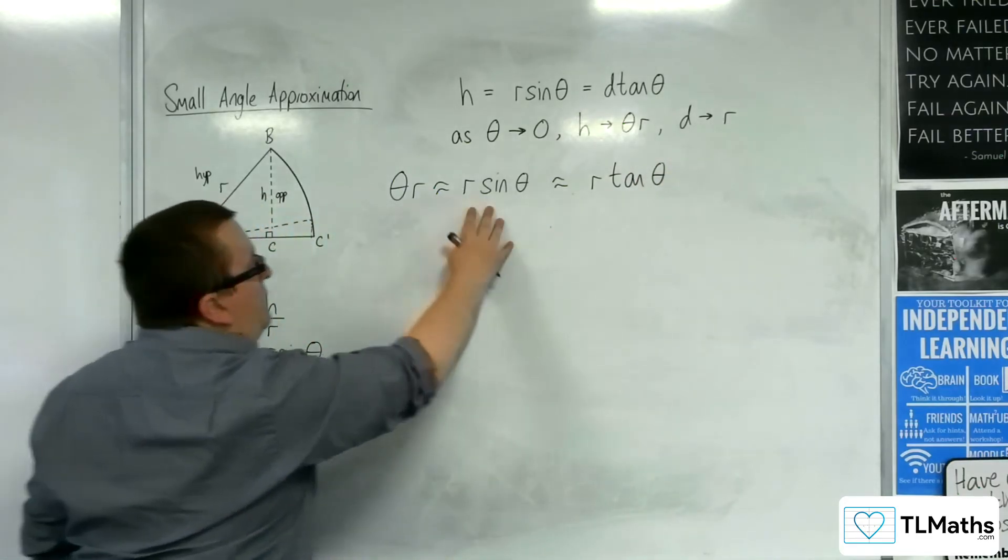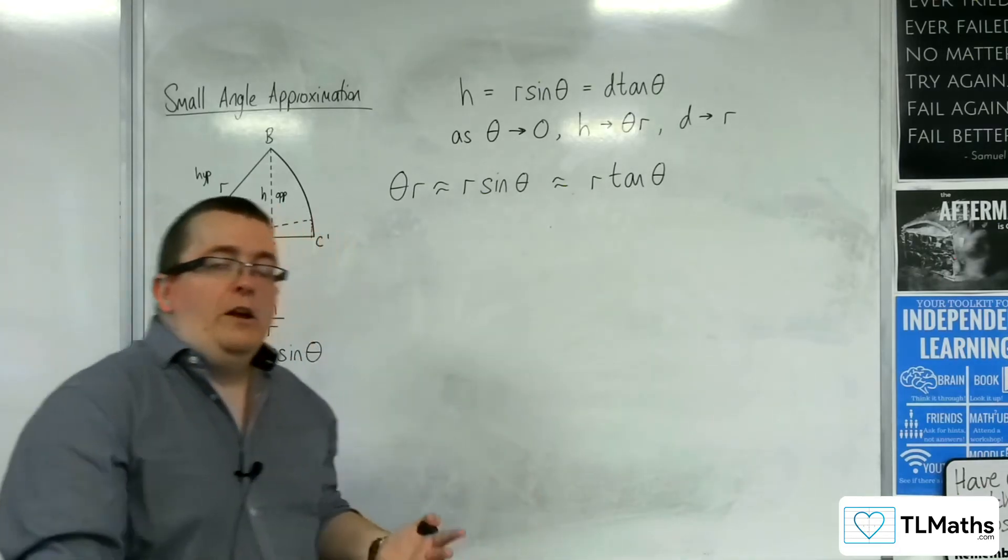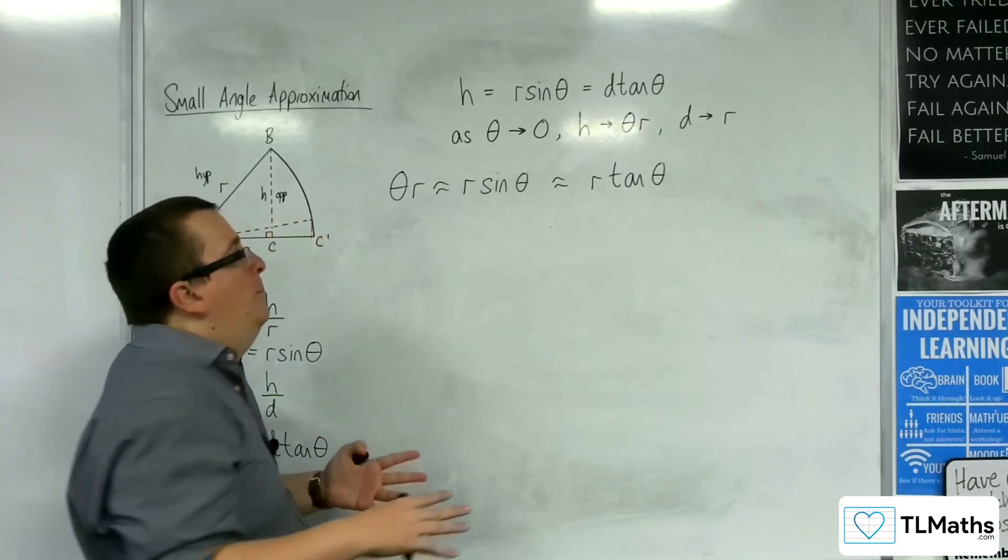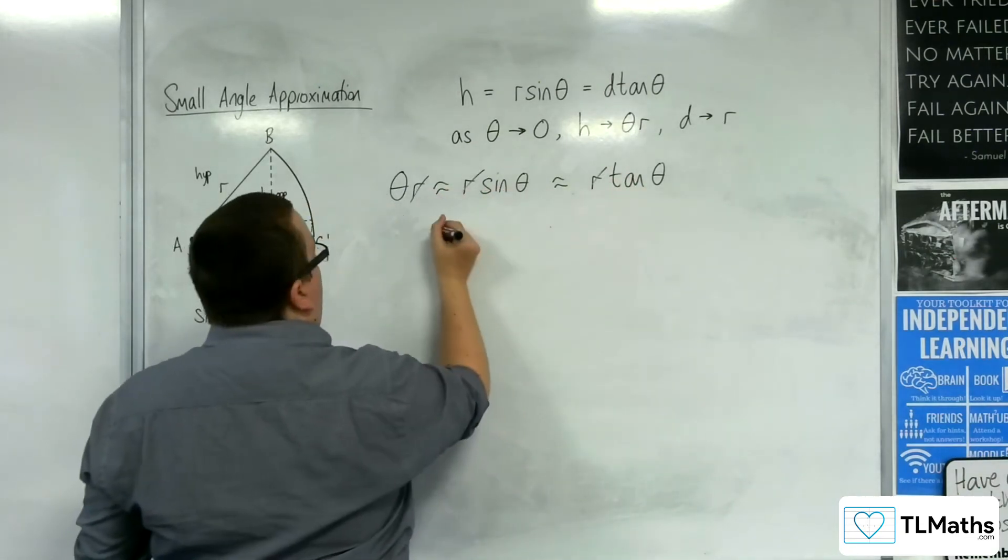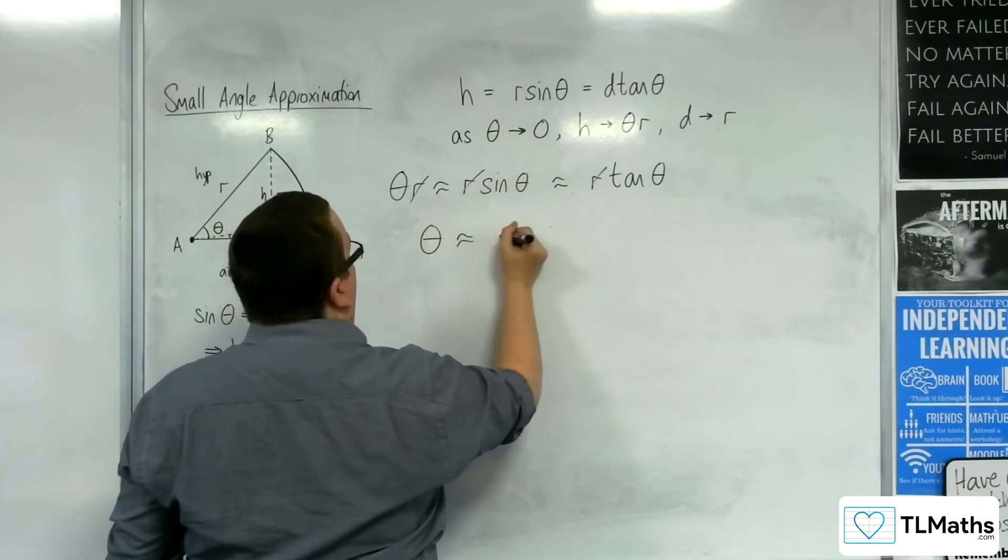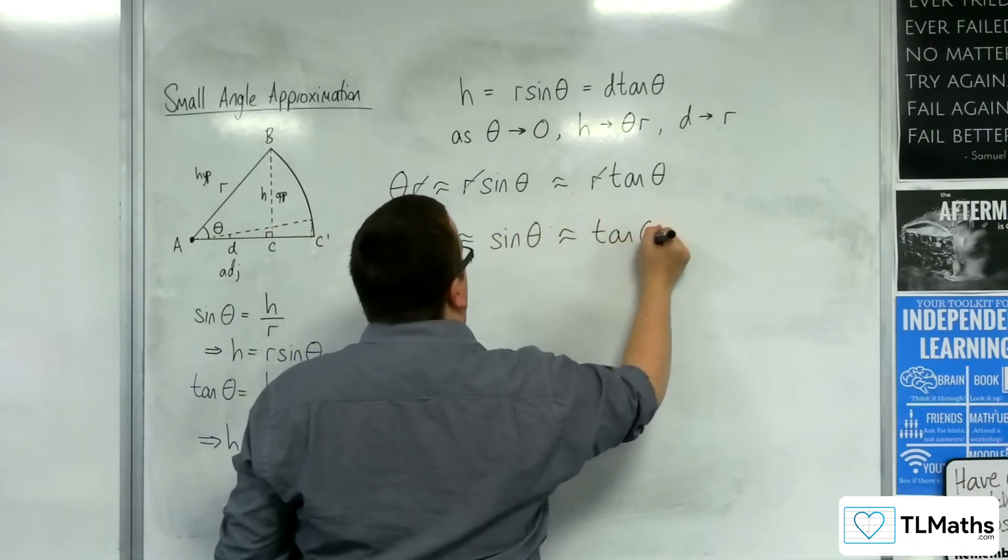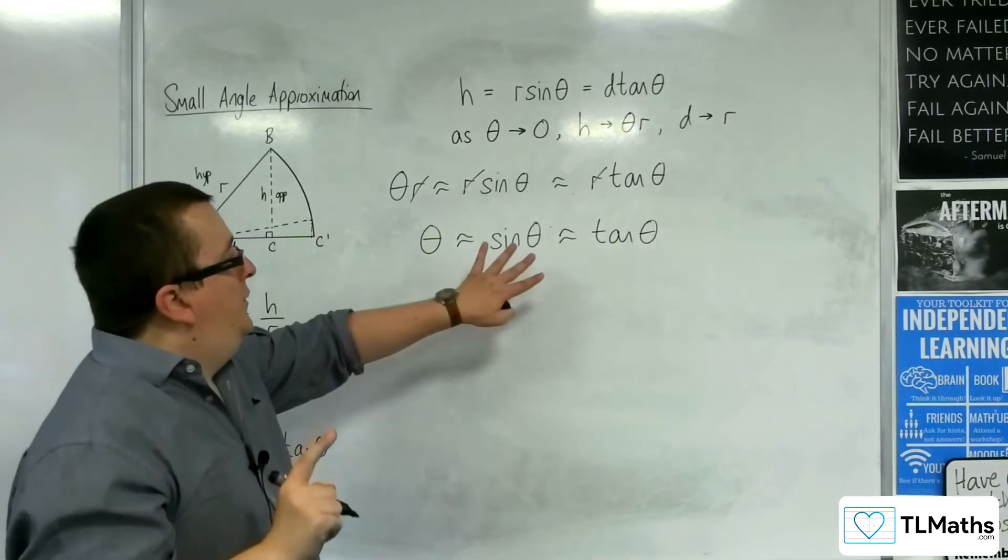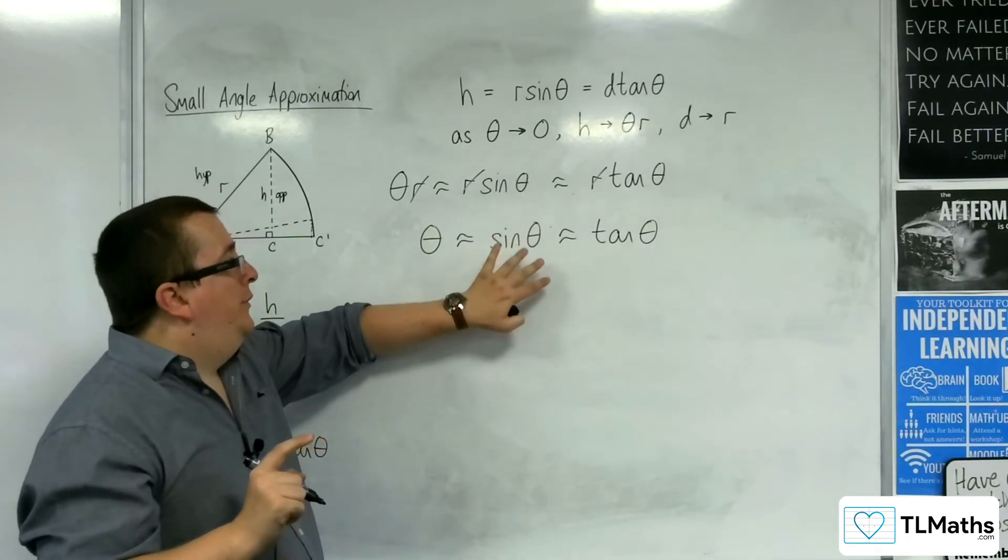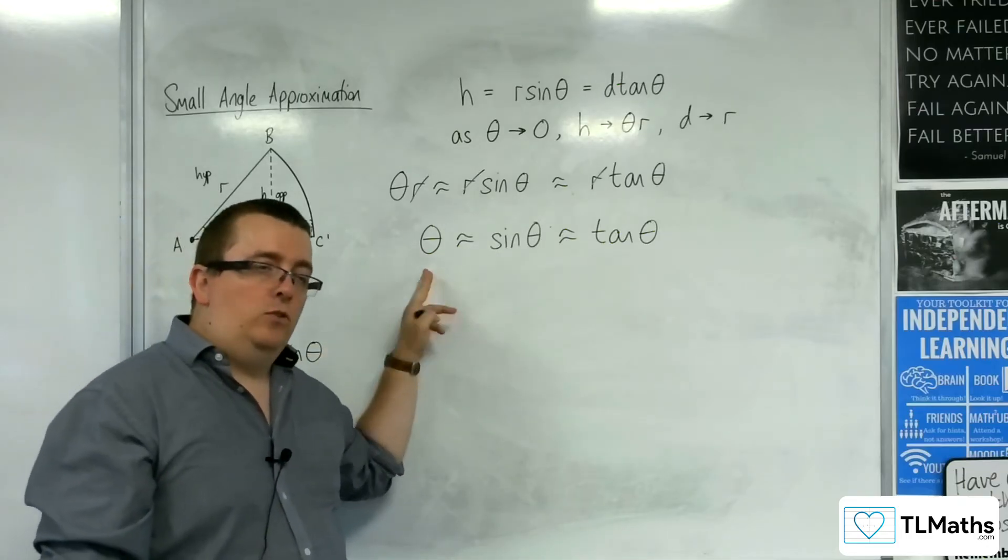Now all three of these things have this R factor in common. So I could divide through by R. And I would then say that theta is approximately sine theta, which is approximately tan theta. So what this is saying is that for small angles, sine and tan are approximately the same as the angle.